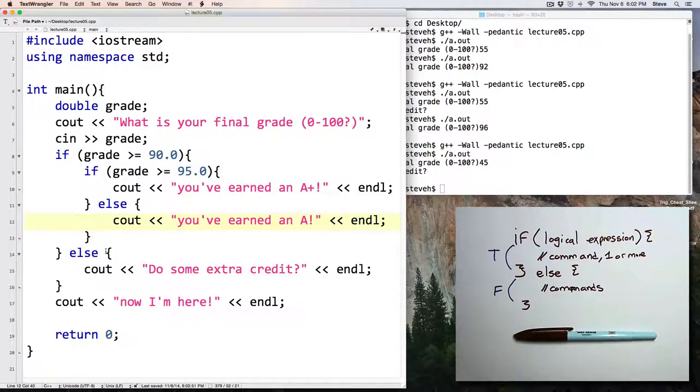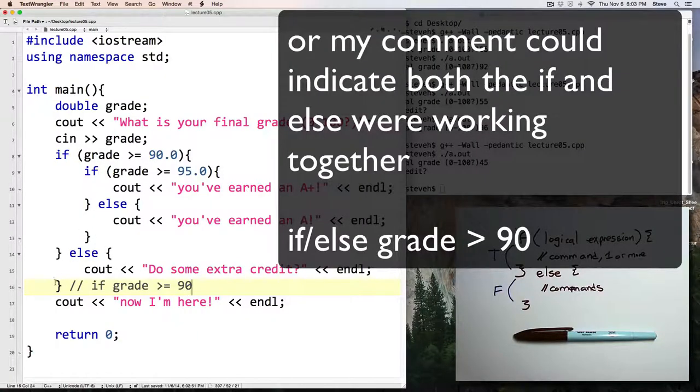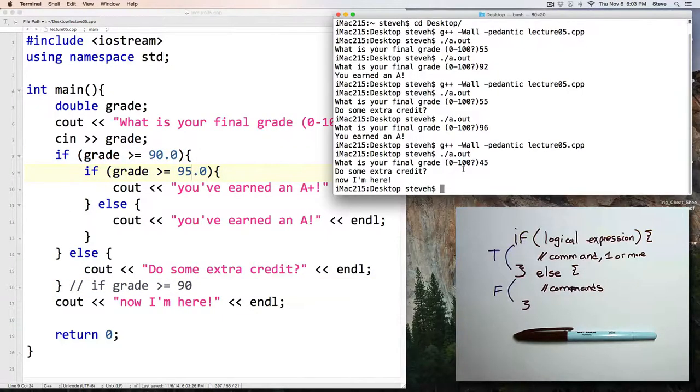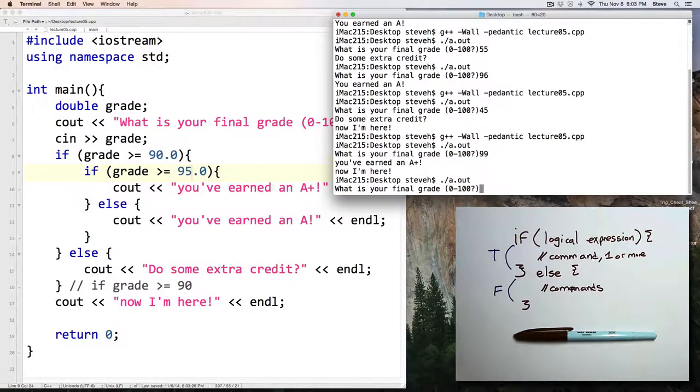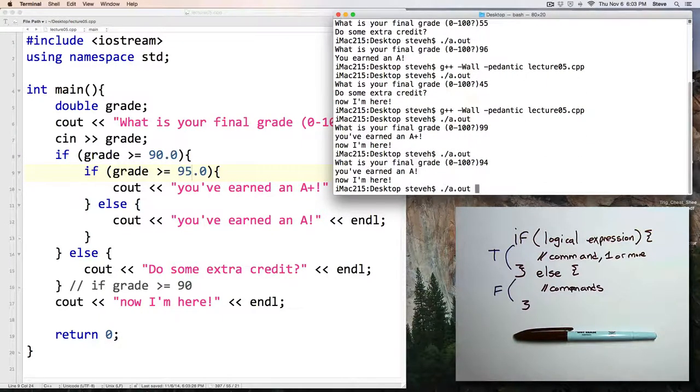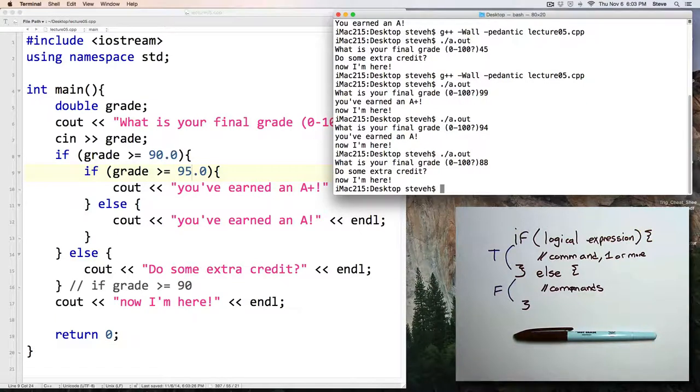And save. Now, notice we're starting to develop quite a few braces here. And especially if they go over more than one screen full. One suggestion is to comment your closing braces and to remind yourself what they match with. If grade greater than or equal to 90. So here I'll just put a comment so that later on, if my eyes start to swim by looking at all of these opening and closing braces, I can remind myself that this one here is supposed to match with this one here. We'll compile the program. And run. And a 99 gets me an A plus. 94 gets me an A. And an 88 tells me to do some extra credit. Well, that's kind of insulting. That's a computer for you. No feelings.